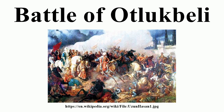Mehmed II returned with his army in 1473 to defeat Uzzan Hassan. The Turkomans had a traditional army that contained considerable amounts of light cavalry. On the other hand, the Ottoman army was using the latest technology — they came with rifles and cannons. This difference between the natures of the two armies marked the result of the battle.